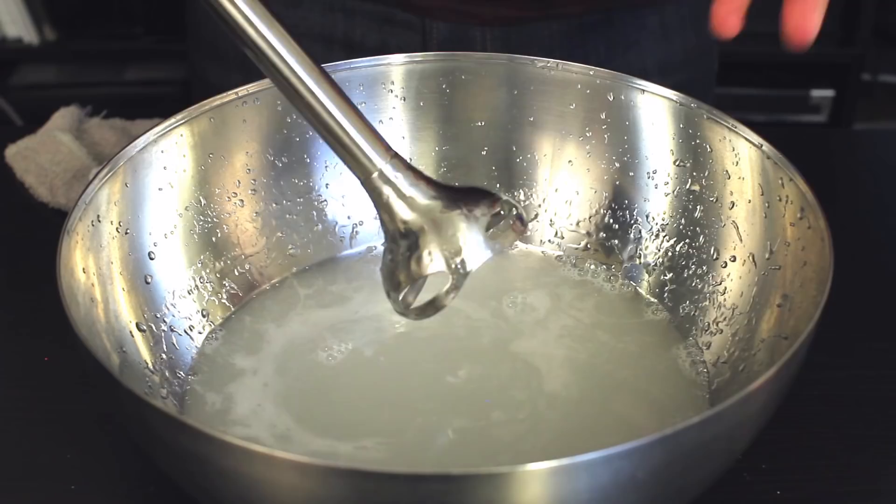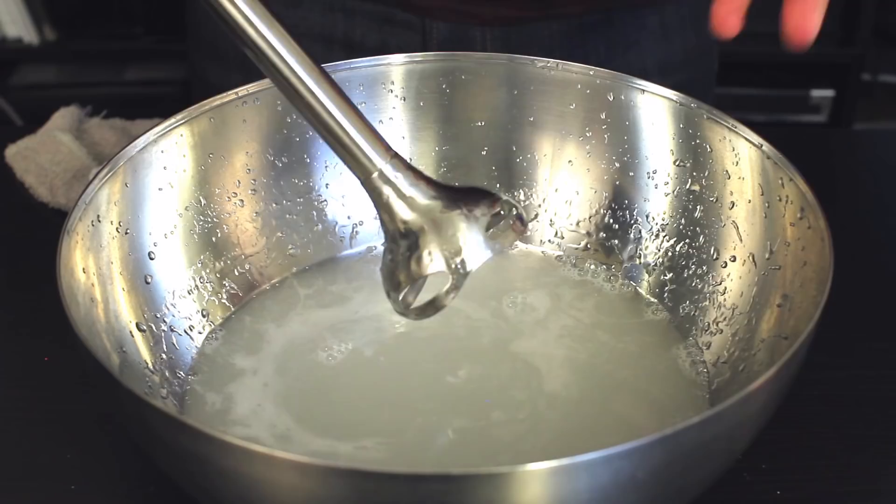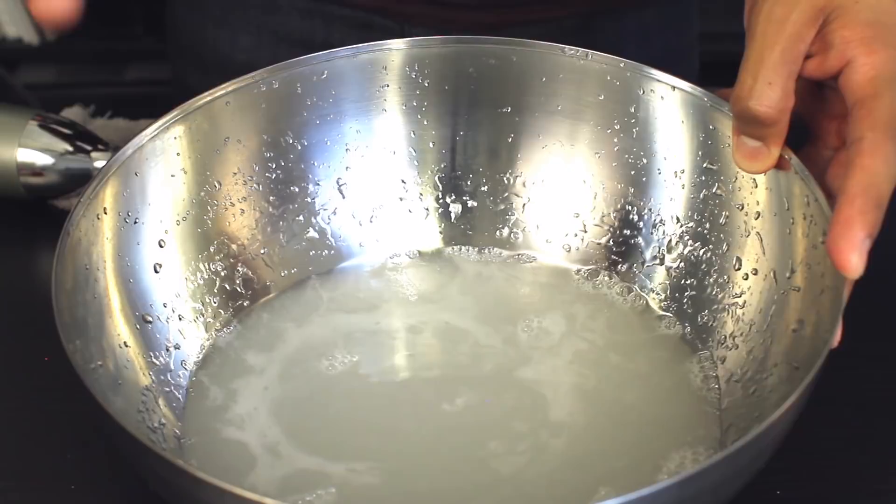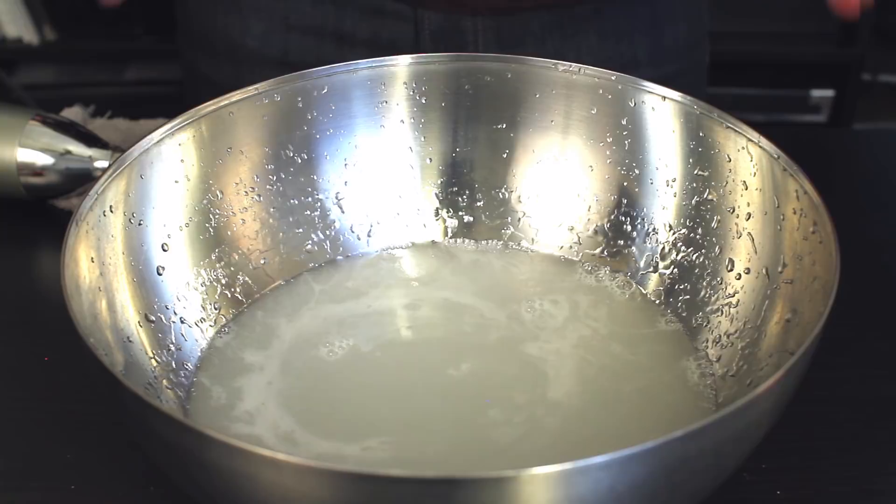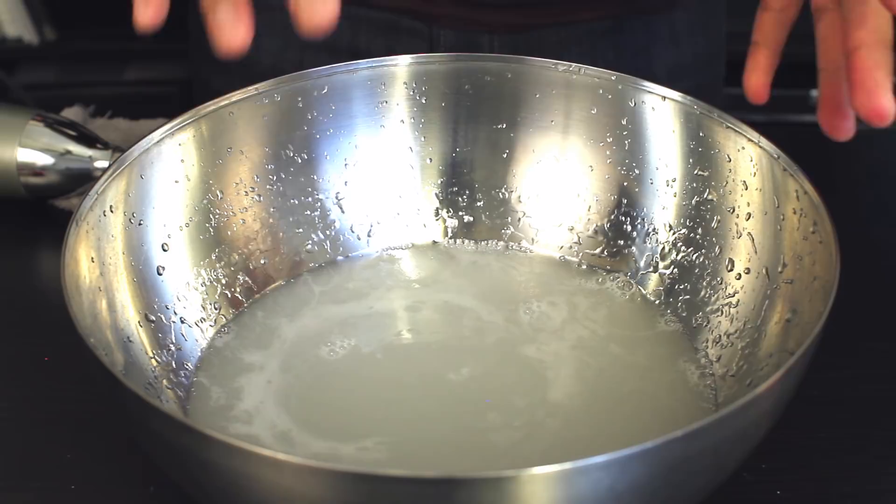Once you've completely mixed your sodium alginate and your water, it should look a little something like this. A little murky, a little bubbly, and you can see a lot of air bubbles have been trapped in the solution. What you want to do is let this sit for about 15 minutes to maybe an hour, depending on how much air is actually trapped in your bath. You want to let this sit maybe even overnight.